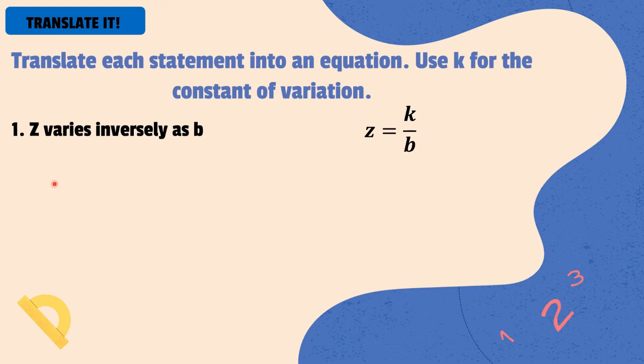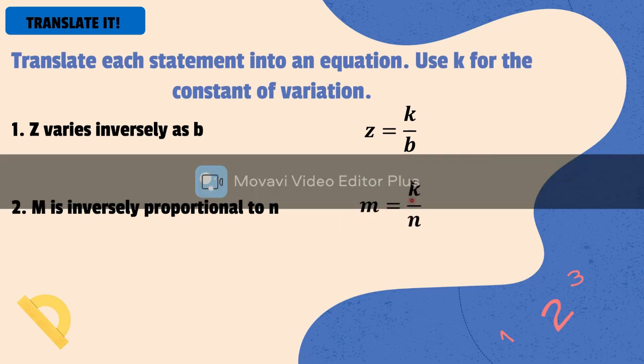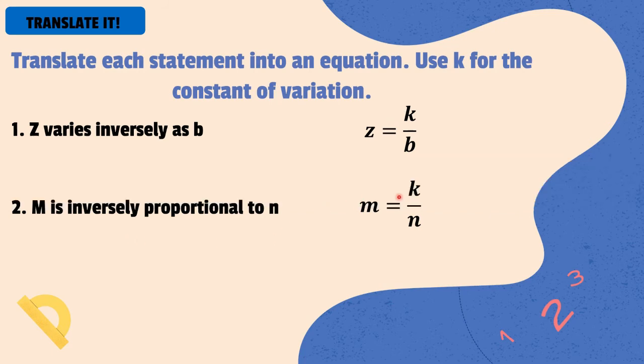Next, we have number 2. m is inversely proportional to n. Our equation is m is equal to k over n. So, again, the first variable mentioned is m, is equal to the second variable mentioned, divided by k. So, m is equal to k over n. This is equivalent to m is inversely proportional to n.